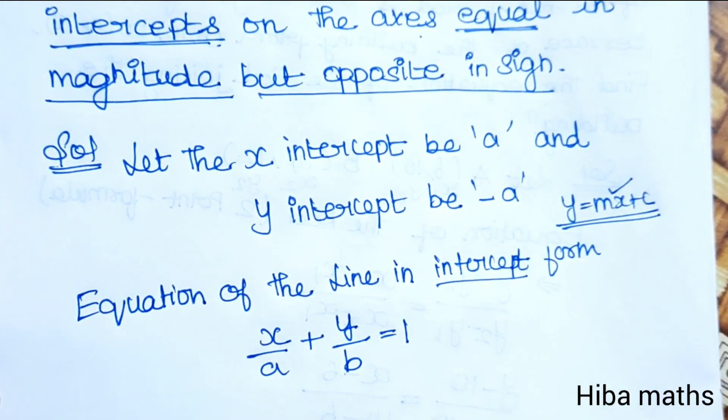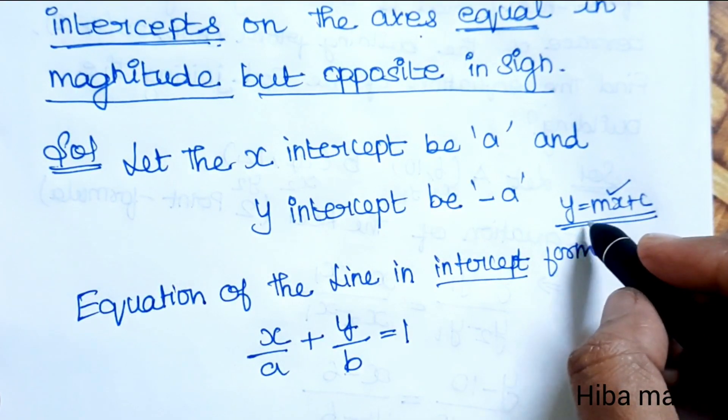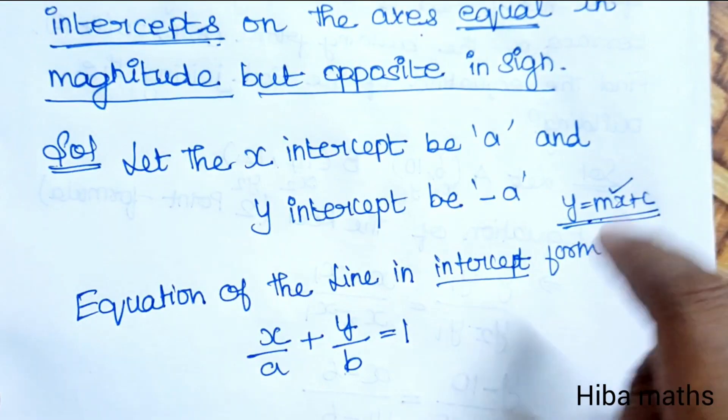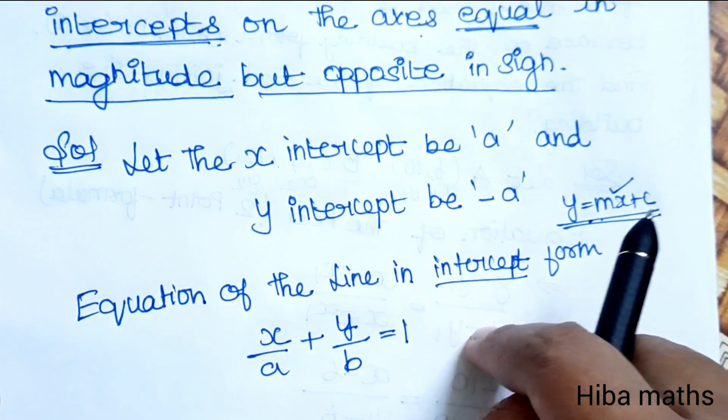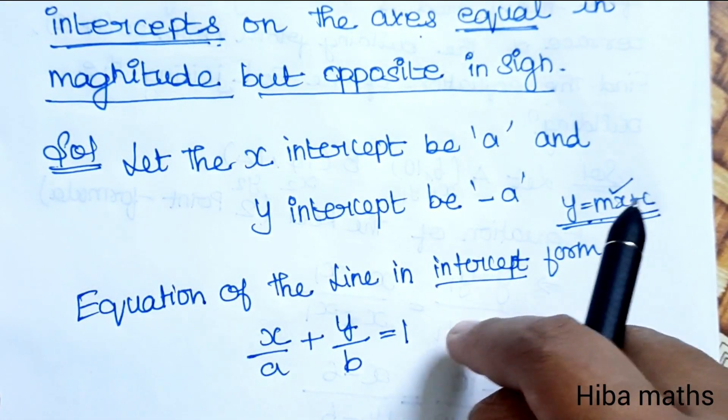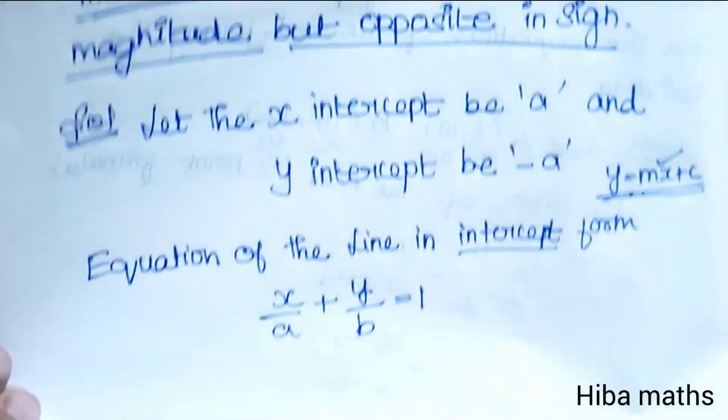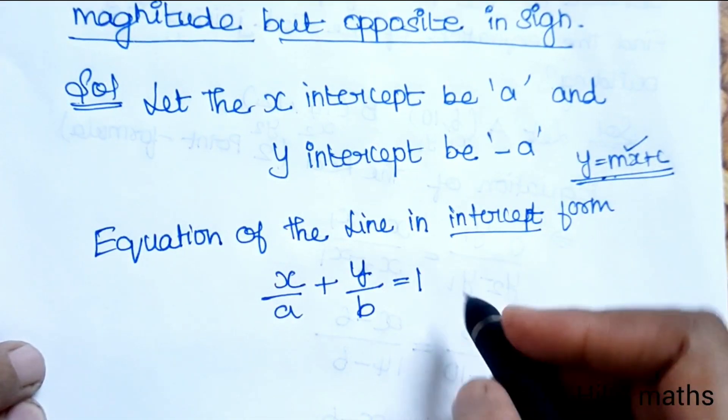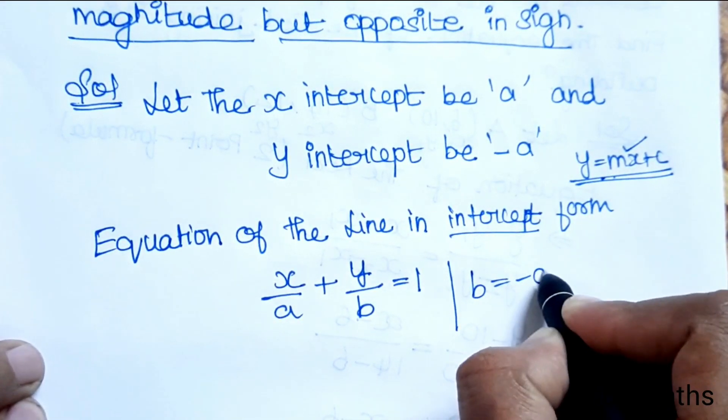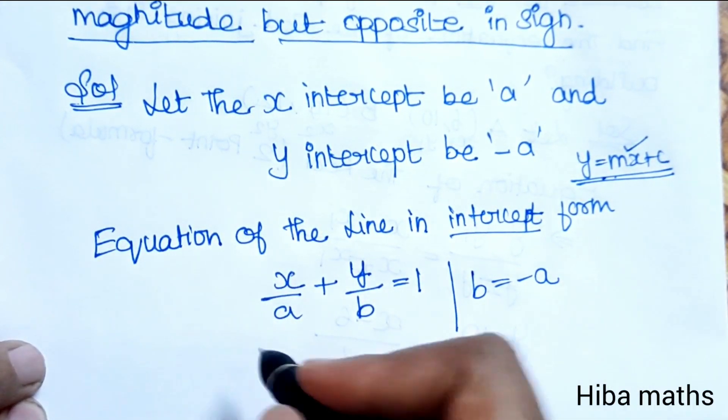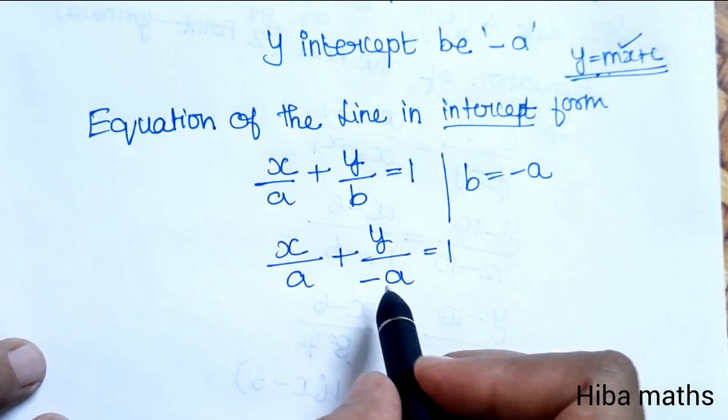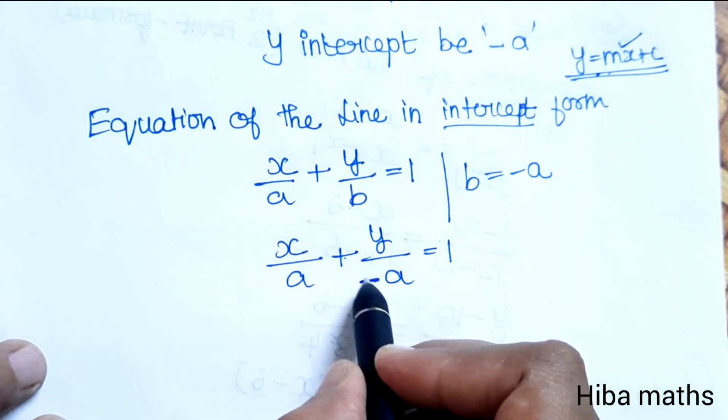Now we will solve this equation. B is equal to minus a, so y is equal to minus a. Therefore, x/a + y/(-a) = 1. Now we have minus here in the denominator, so we need to solve this equation.